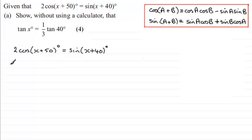So using these, we'll just expand our brackets. We've got 2 then multiplied by the cosine of x times the cosine of 50. And these are both given in degrees. And then it's going to be minus the sine of x degrees and the sine of 50 degrees. So quite a lot there. And let's just close that bracket off.